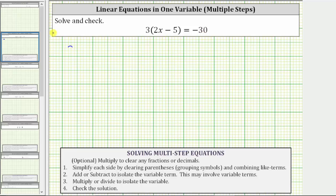We are given the equation three times the quantity two x minus five equals negative 30. This is classified as a multi-step equation. For the first step, we will simplify both sides of the equation by clearing the parentheses and combining like terms, which means for the given equation, the first step is to distribute three.